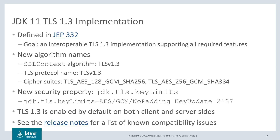There are no new APIs that needed to be added to support the TLS 1.3 implementation, so you use the same Java APIs when using TLS 1.3 as you did for previous TLS versions. However, there are some new algorithm names — there is now a TLSv1.3 SSL context algorithm and a TLSv1.3 protocol name — and there are two new cipher suites, both of which are requirements of the RFC. There is one new security property named jdk.tls.keyLimits, which you can use to limit the amount of data an algorithm may encrypt with a specific set of keys.